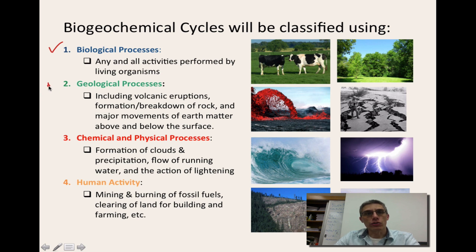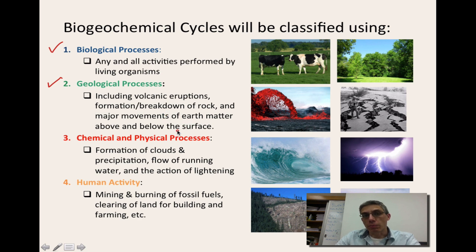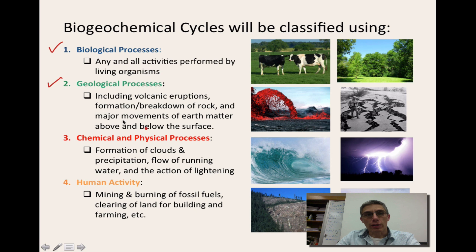A second way to classify a biogeochemical cycle is geologic — some cycles include aspects such as volcanic eruptions, the formation or breakdown of rock, or major movements of the earth above or below the surface. Over here you can see a good example of a volcano putting out lava, and over here we have large cracks in the earth representative of maybe an earthquake. The third classification is chemical and physical processes — the formation of clouds and precipitation, the flow of running water, and the action of lightning.